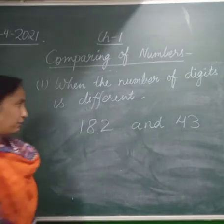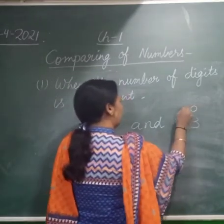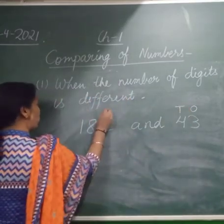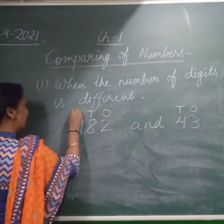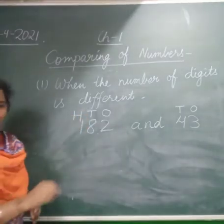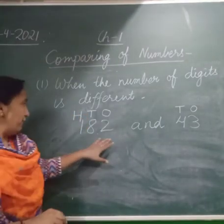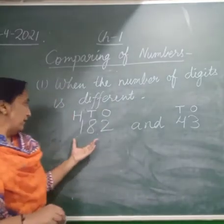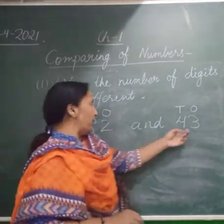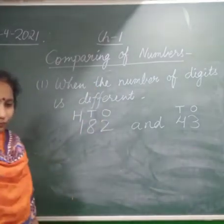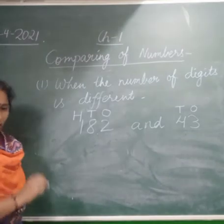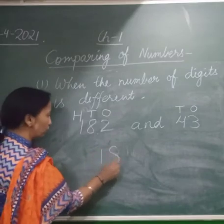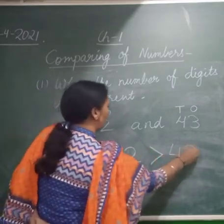Let's see the place values of these numbers. 3 is at 1's place and 4 is at 10's place. Similarly, here at 1's place we have 2, 8 at 10's place, and 1 at 100's place. So 182 is a 3-digit number and 43 is a 2-digit number. A 3-digit number is always greater than a 2-digit number, so 182 is always greater than 43.